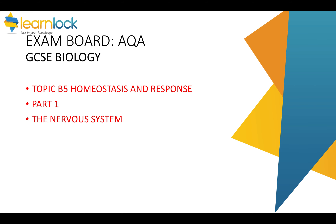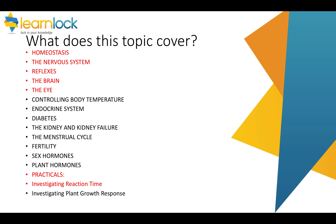Hello and welcome to the GCSE Biology tutorial for Topic 5, Homeostasis and Response. This tutorial covers part 1: the nervous system. This includes homeostasis, the nervous system, reflexes, the brain, and the eye. This is quite a large topic, and so the rest of the information is found in other tutorials.